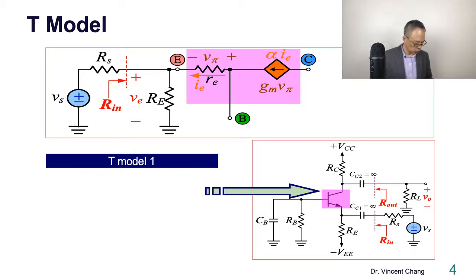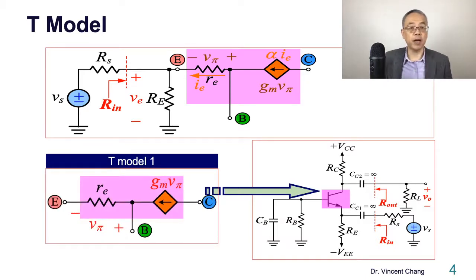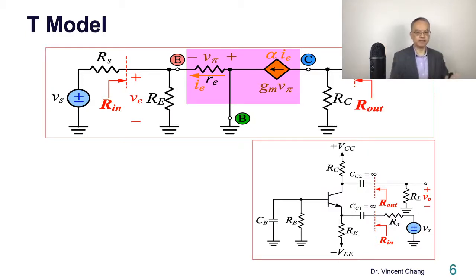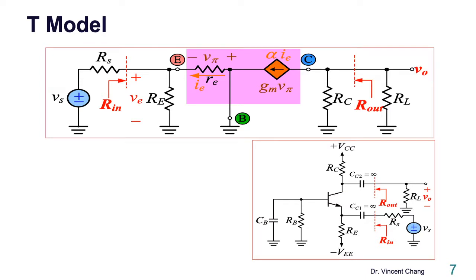But pay attention to this. We have two types of T model. The T model number 2, current control current source. And T model number 1, the voltage control current source, V pi, gmV pi. And then ground base. The resistance between collector and the ground, there's RC and RL. The T model number 1.